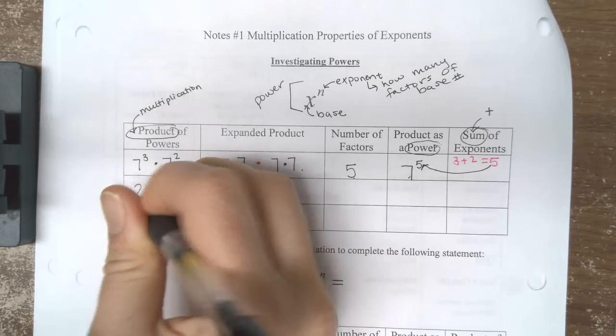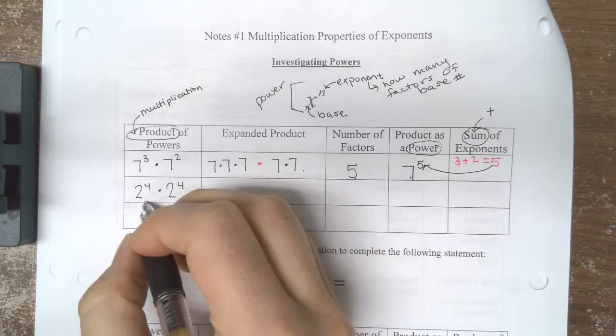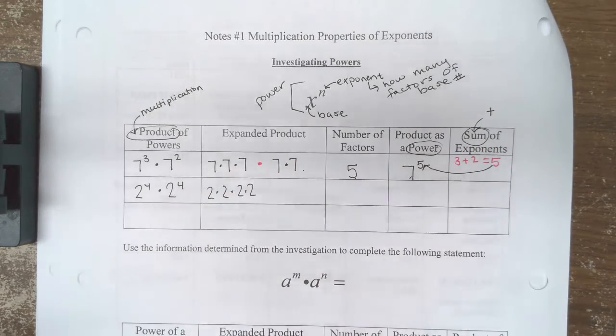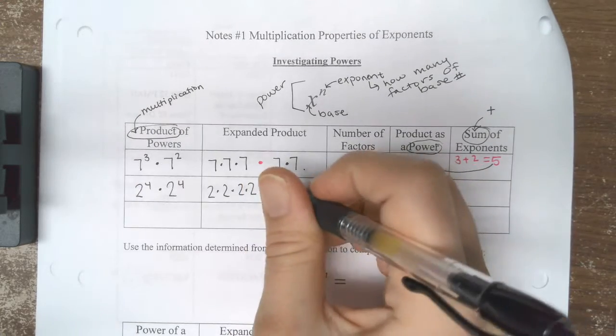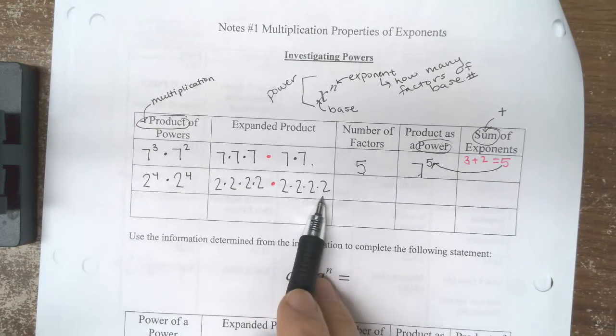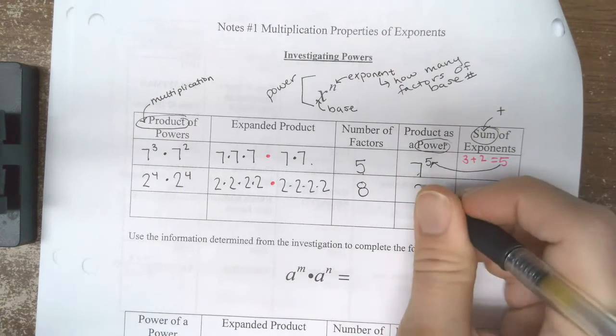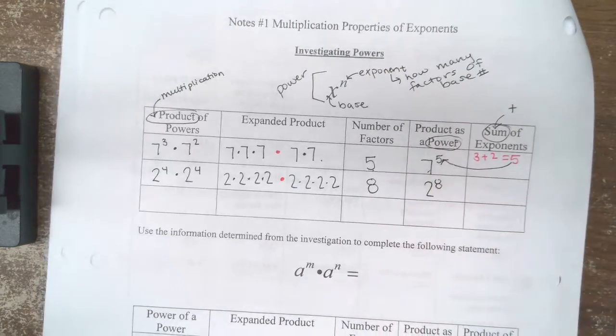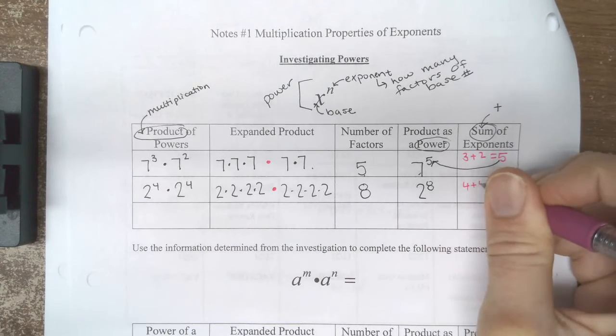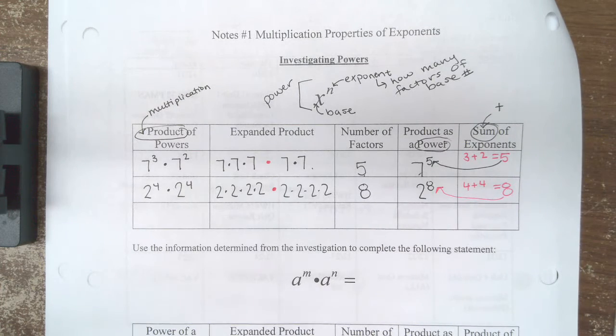Let's look at another example. I have 2 to the 4th times 2 to the 4th. The first 2 to the 4th means I have 4 factors of 2. The second 2 to the 4th again means I have 4 factors of 2. And all together I have 8 factors of 2, or I could write this as 2 to the 8th. Notice again, if I add up the exponents I had here, I would get my product as a power again.